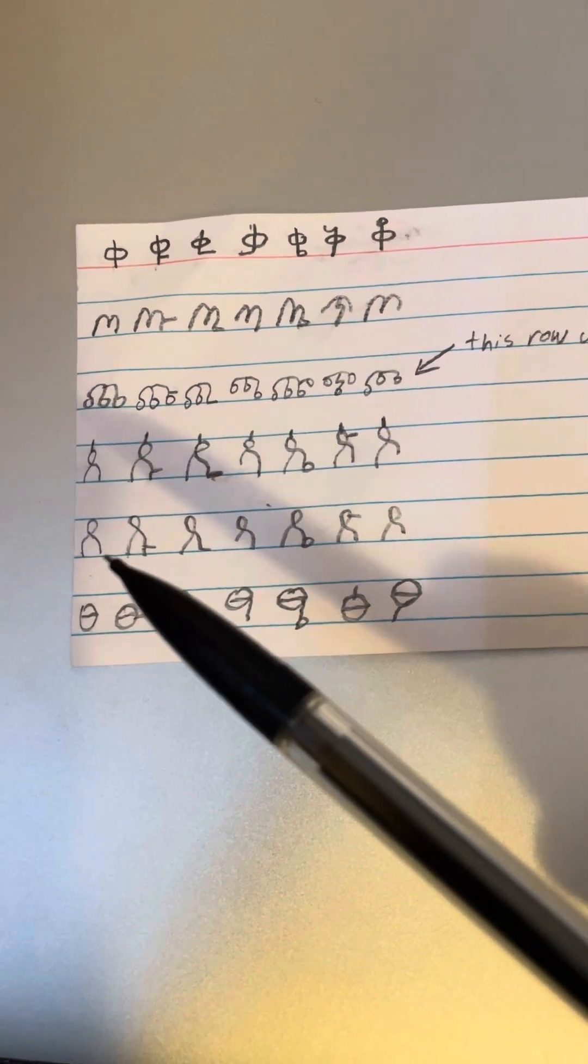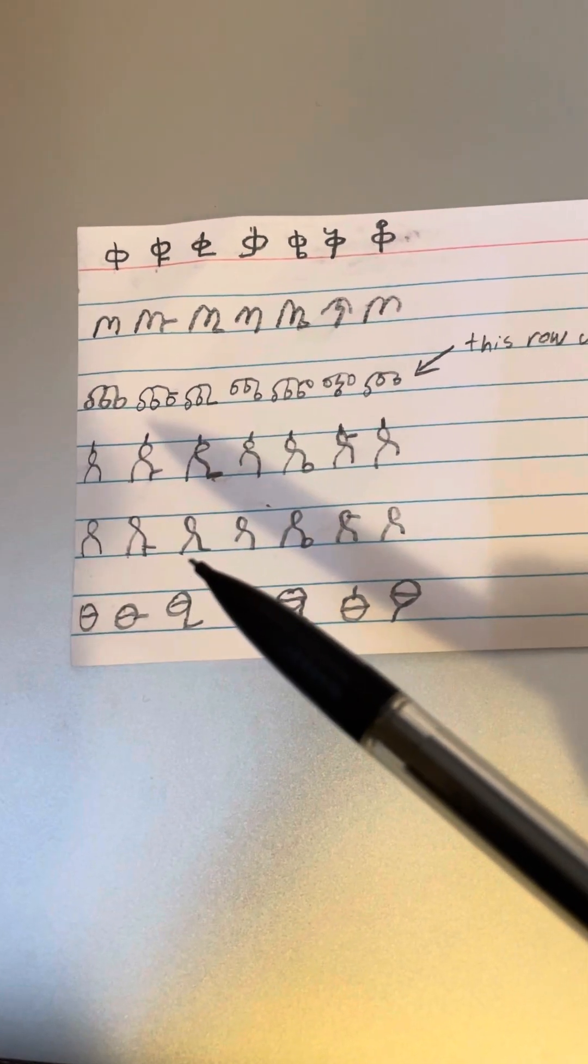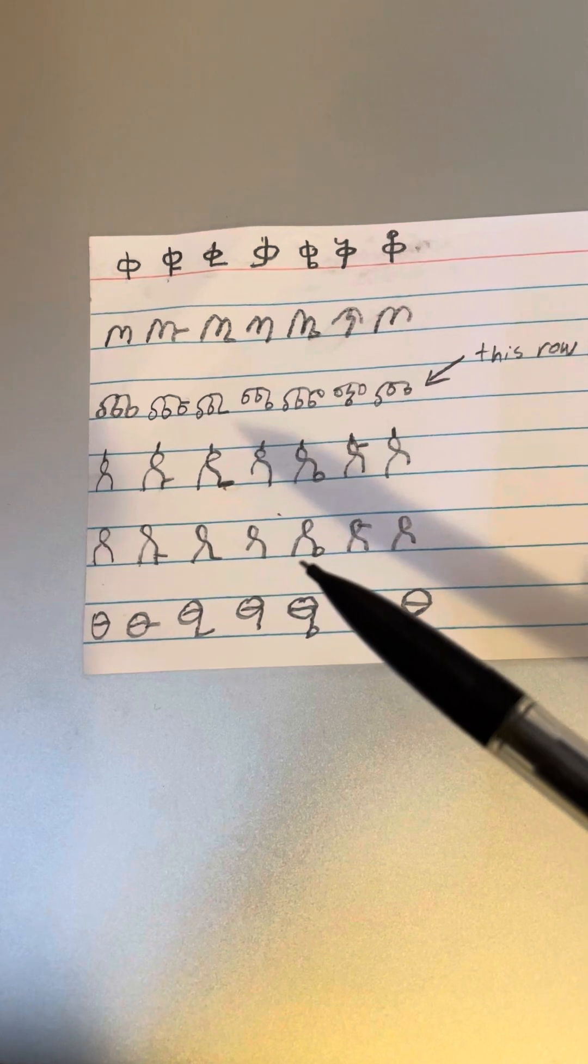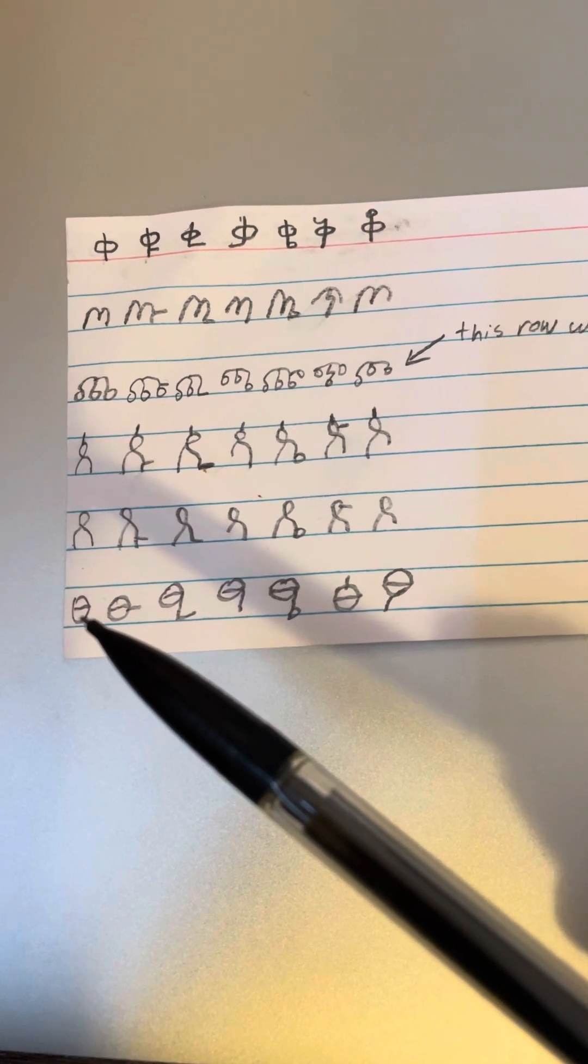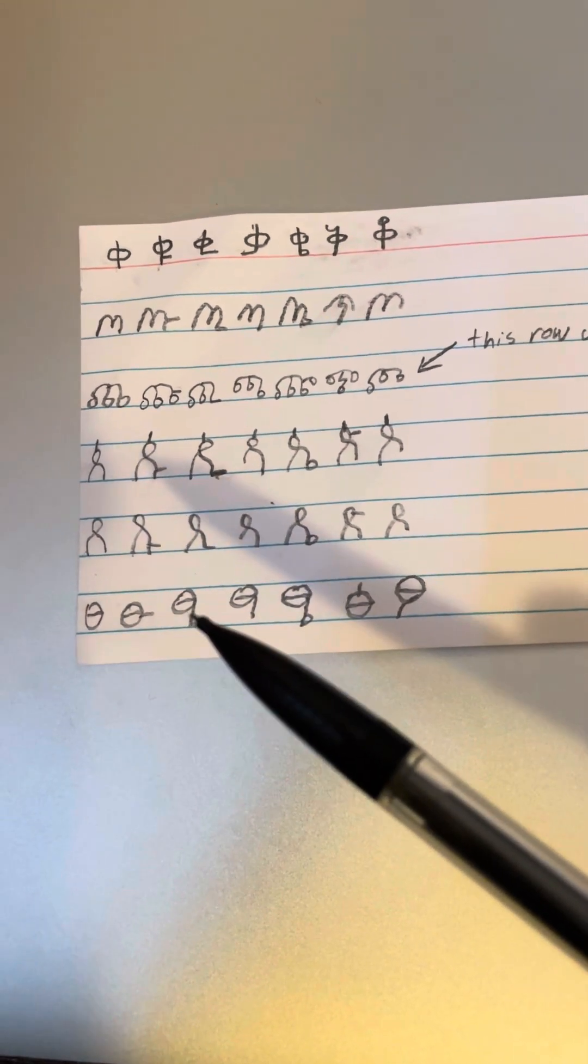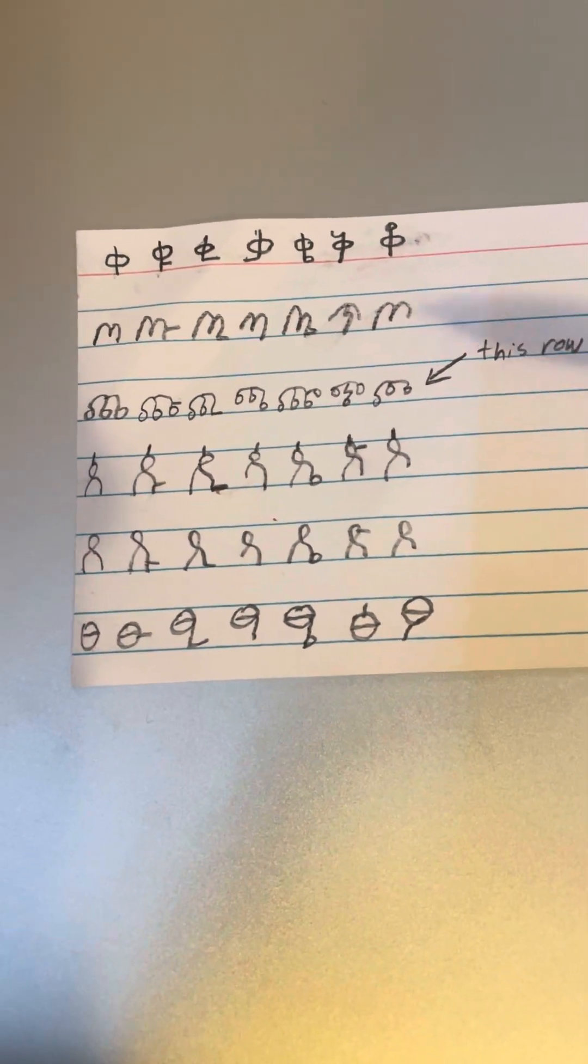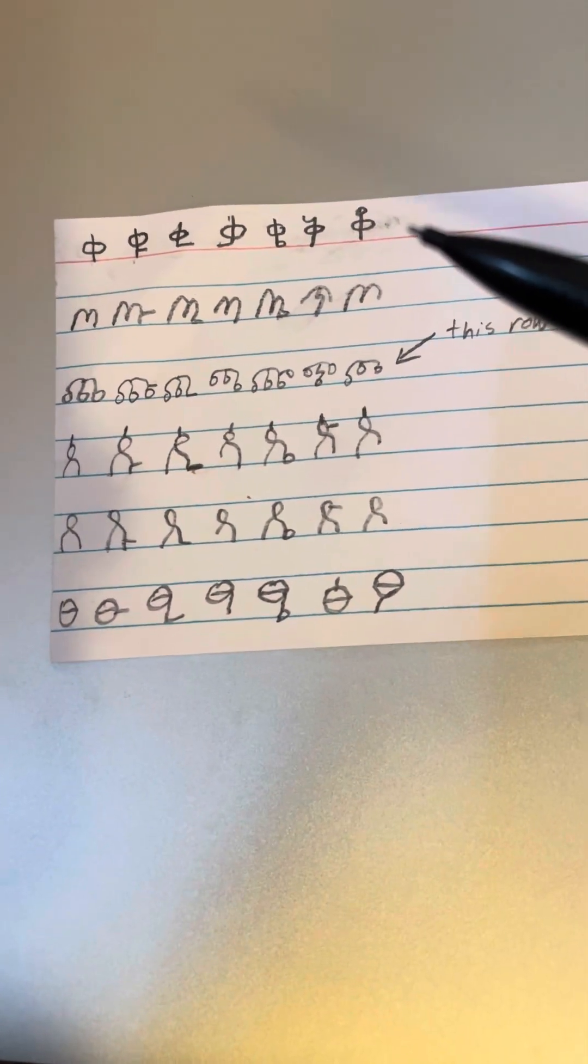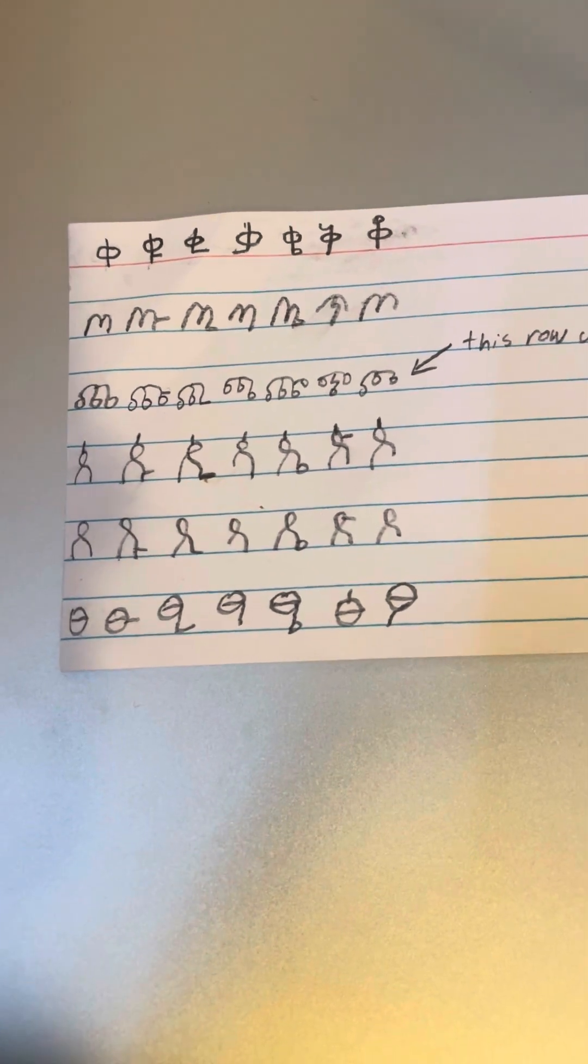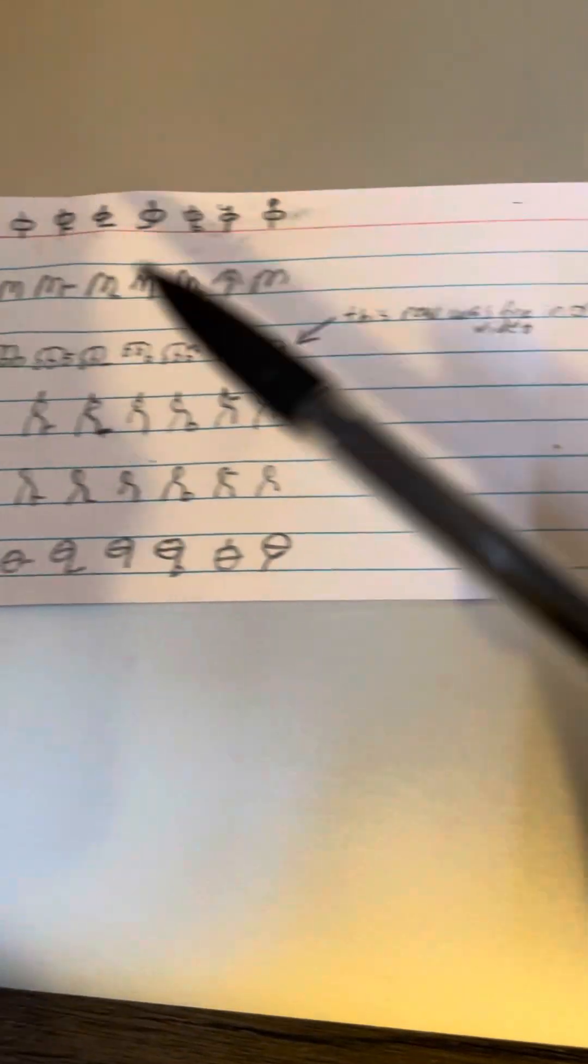And then here these two look similar and then this is a repeat. So these are the explosive letters in Amharic. They have corresponding normal versions, you could say. Like the K, there's also a K sound, this is K. This on the other hand is K.